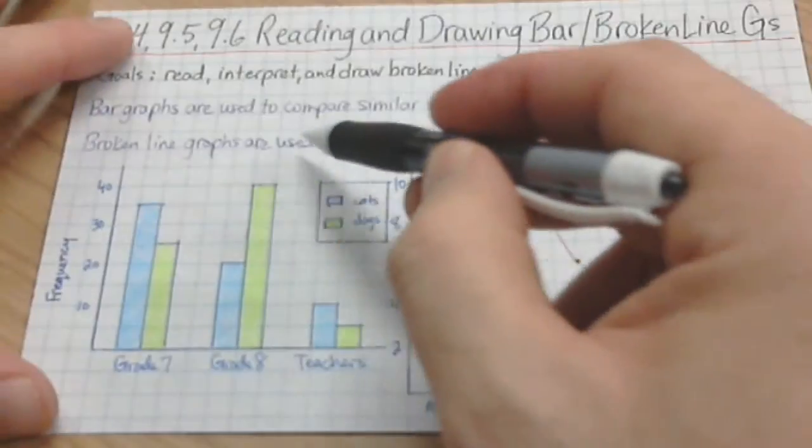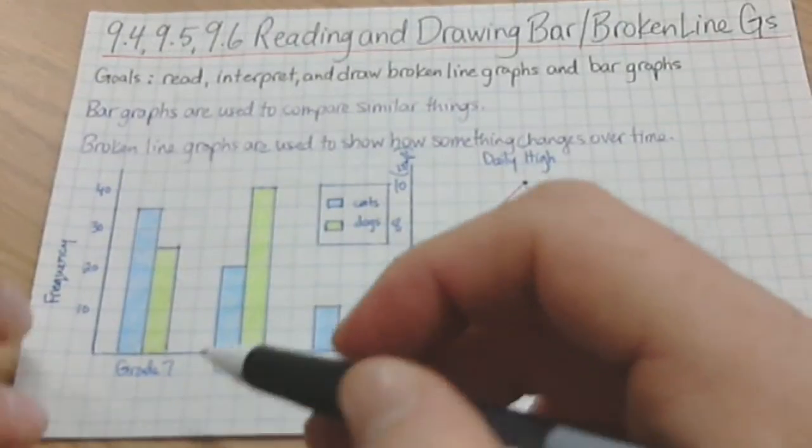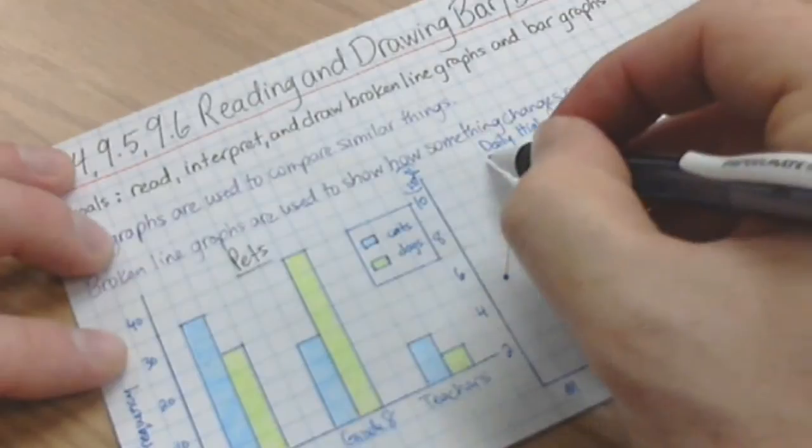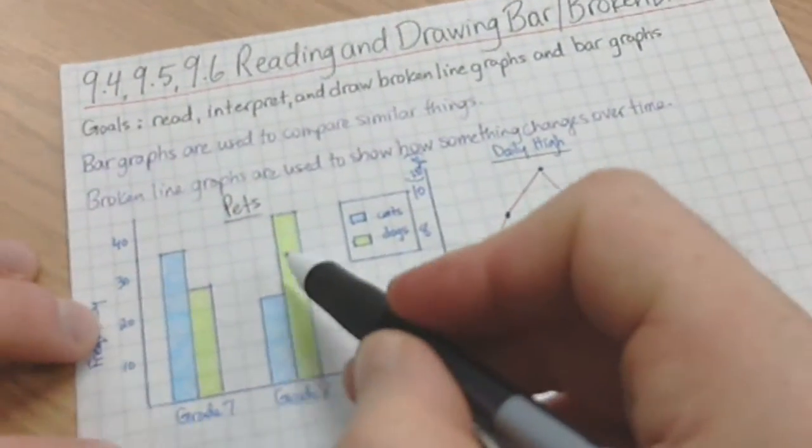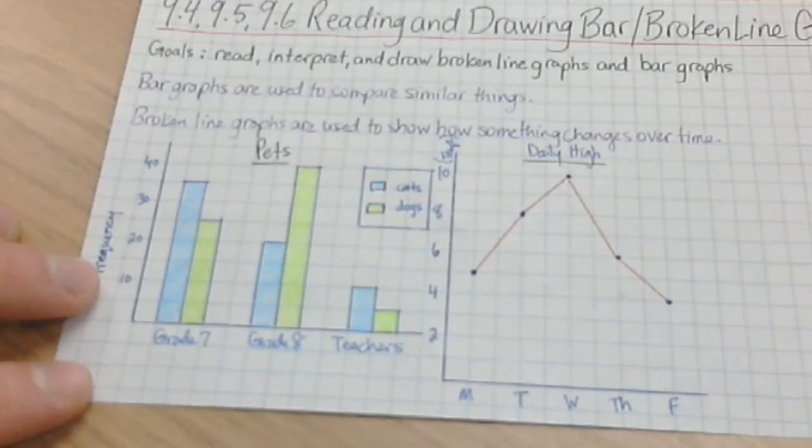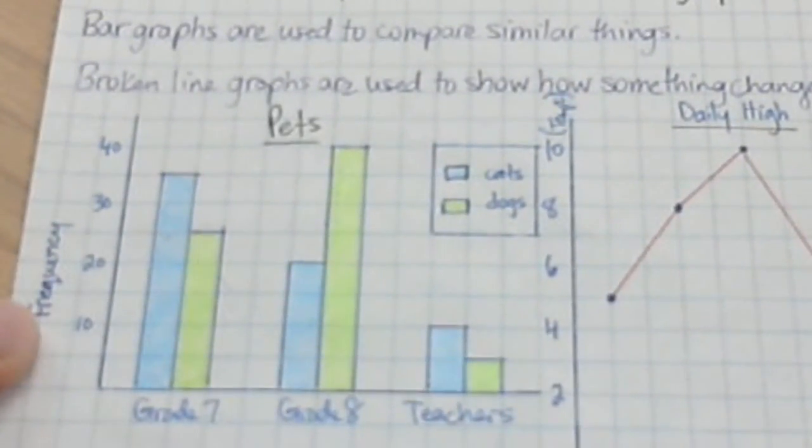So this is a bar graph, and what it shows, actually it's missing the title. It shows the number of pets, let me just zoom in a little bit. It shows the number of pets that grade 7 students have, grade 8 students have, and the teachers have.